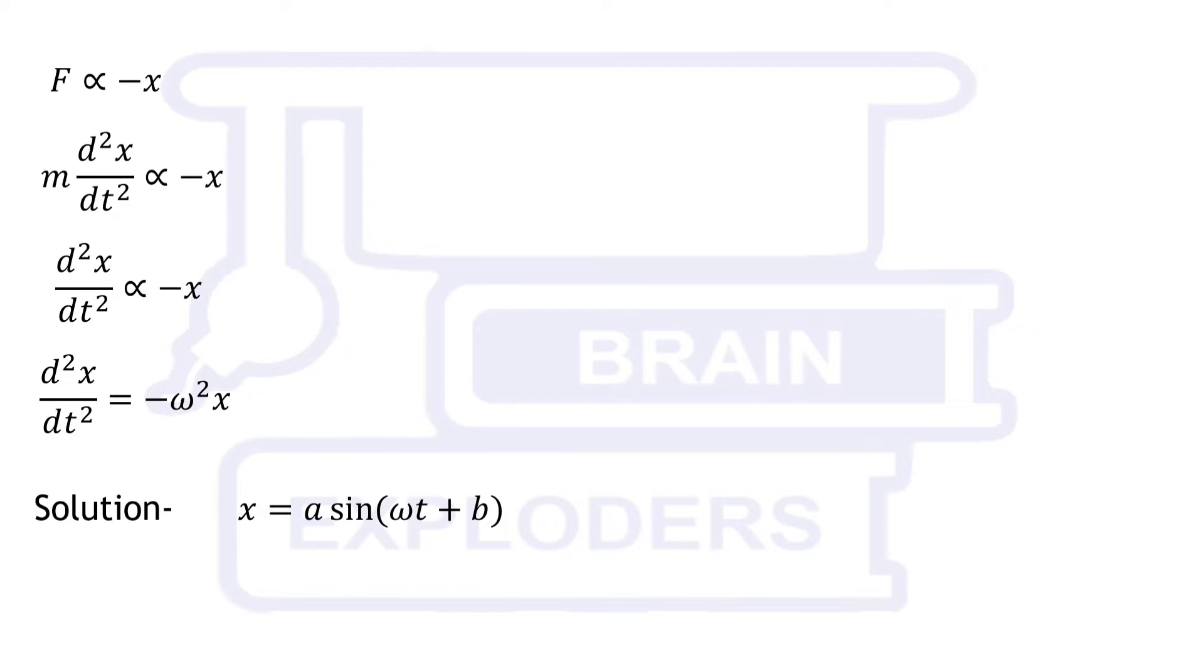The solution tells us that a is the maximum distance of object from its mean position and b is a constant which depends on the position at which we start to measure the time.